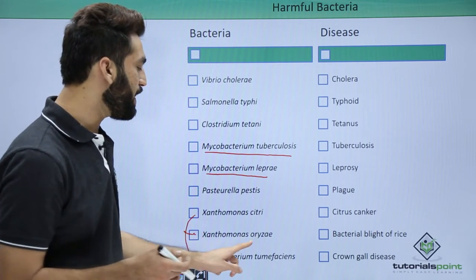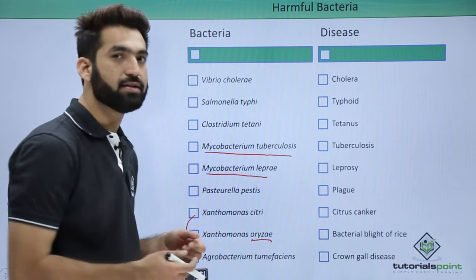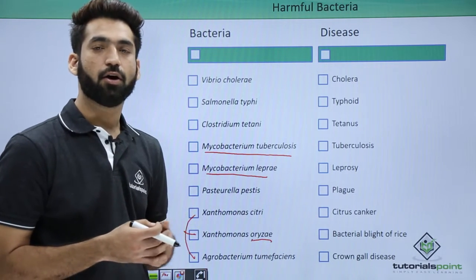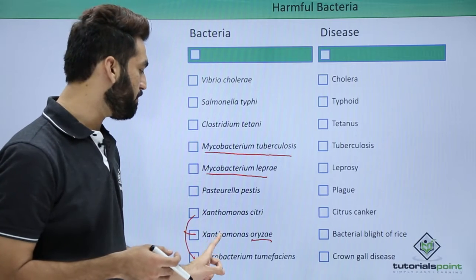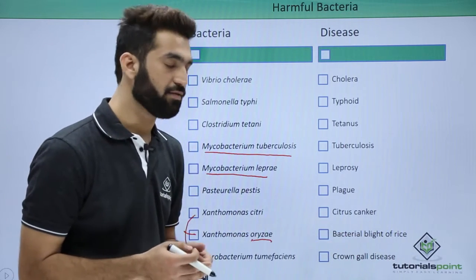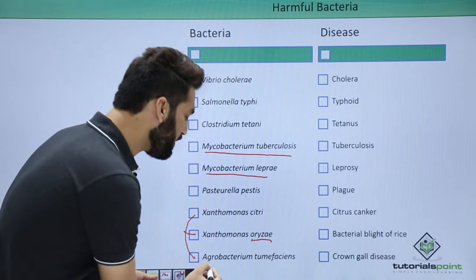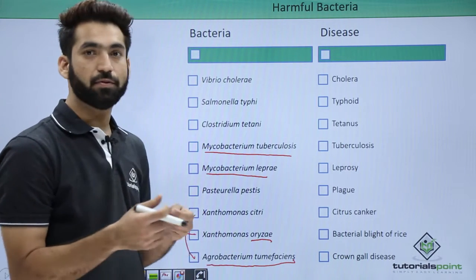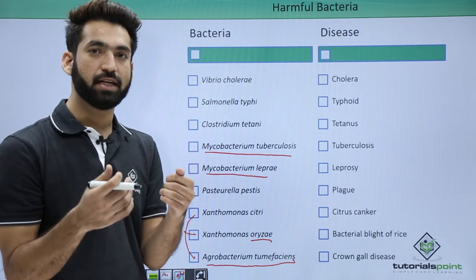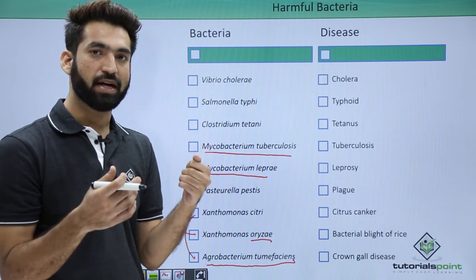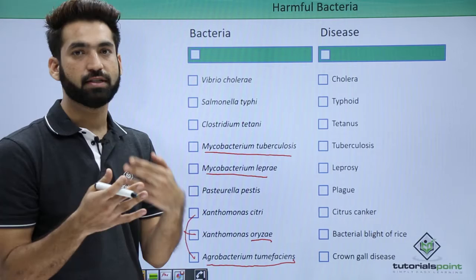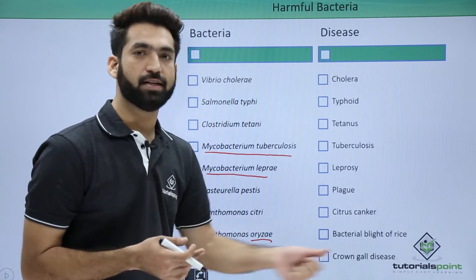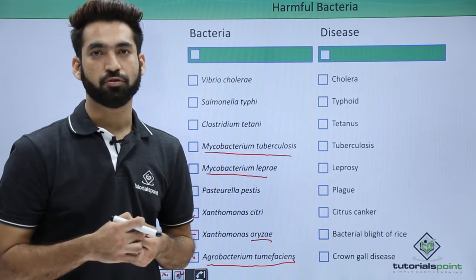Xanthomonas oryzae — the name suggests it is related to Oryza, and rice's scientific name is Oryza sativa — causes bacterial blight in rice. We also have one very important bacterium called a natural genetic engineer: Agrobacterium tumefaciens, which is used to transfer genetic material carrying a gene of interest, and it causes crown gall disease, also called plant tumor, in plants.